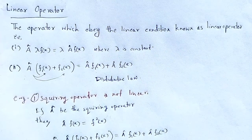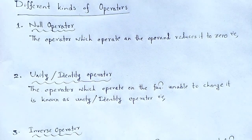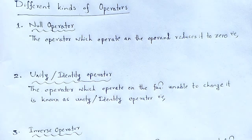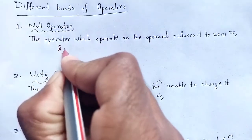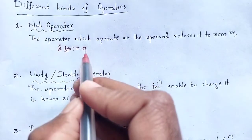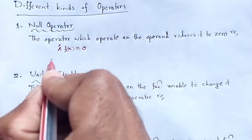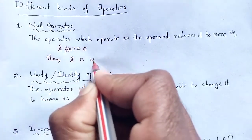Now we discuss different kinds of operators. One is the null operator: the operator which operates on the operand and reduces it to zero is called the null operator. When that operator operates over the operand f of x and gives rise to 0, then we say that operator A-cap is a null operator.